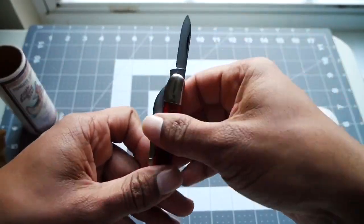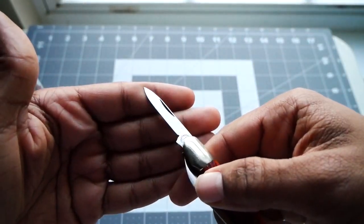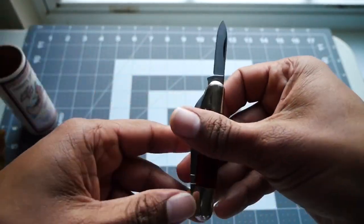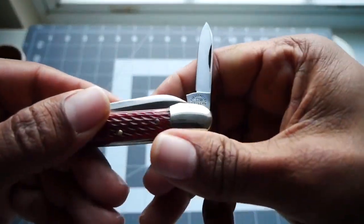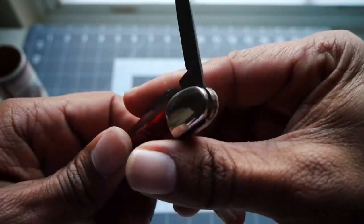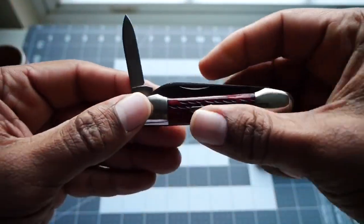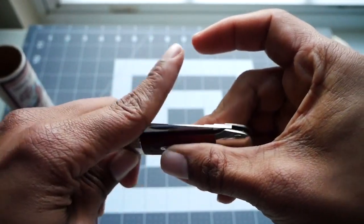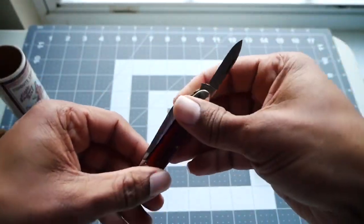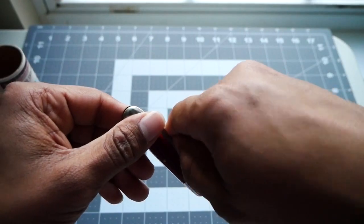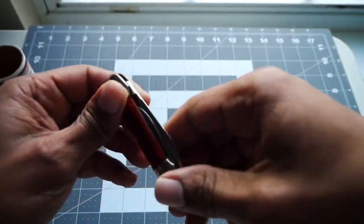On this side, we have a pin blade. And you can see here, the tang stamps on the pin blade. Nothing on the back. Also no half-stop on this pin blade. And again, I'd say maybe the pull is about a 4 on the pin blade.